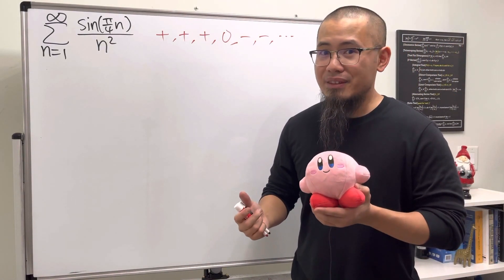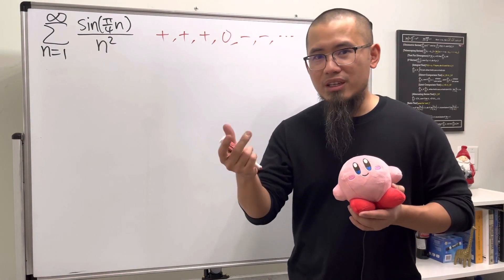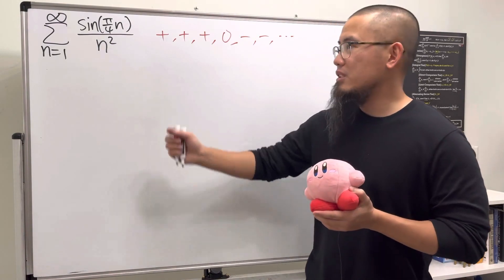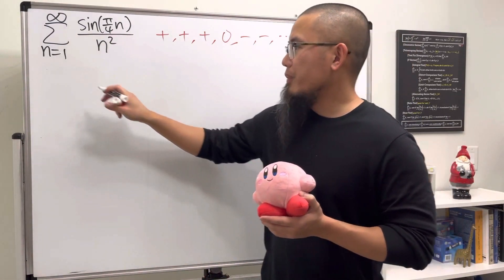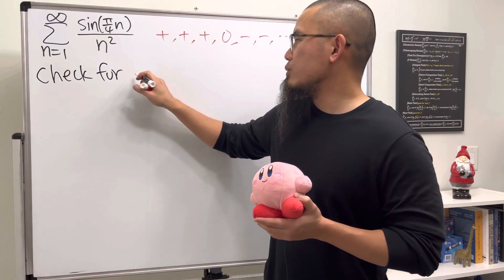As you can see, this is really not the alternating series that we have. Alternating series should be positive-negative-positive-negative or the other way around, so we cannot use the alternating series test for this. Let's check for absolute convergence.